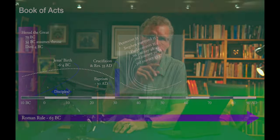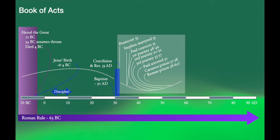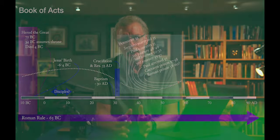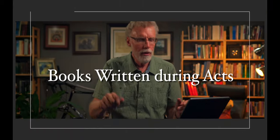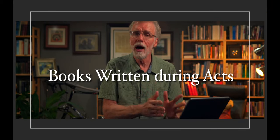The Book of Acts closes with Paul being arrested when he visits Jerusalem. He's imprisoned in Caesarea, appeals to Caesar, and is then sent off and imprisoned in Rome. So if Luke and Acts are written together, that would give us a latest date of possibly around 60 to 65 AD, the time of Paul's first imprisonment.